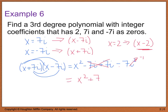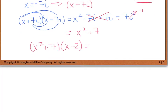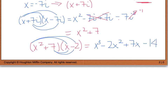So I have x squared plus 49 as a factor, and then I'm going to multiply that by x minus 2. When we do that, we end up with x cubed minus 2x squared plus 49x minus 98. So now I have a third-degree polynomial that utilized the zeros of 2 and plus or minus 7i. I've just completed example 6.